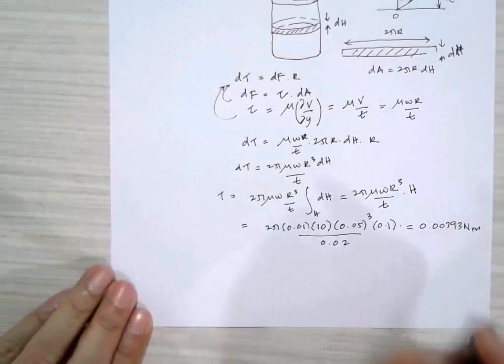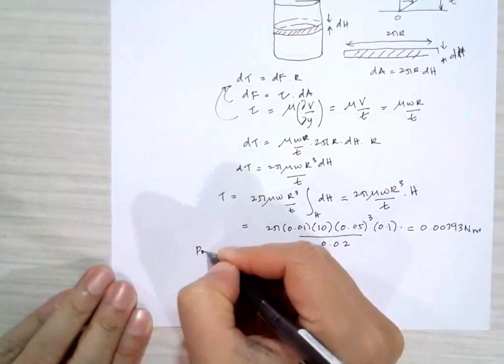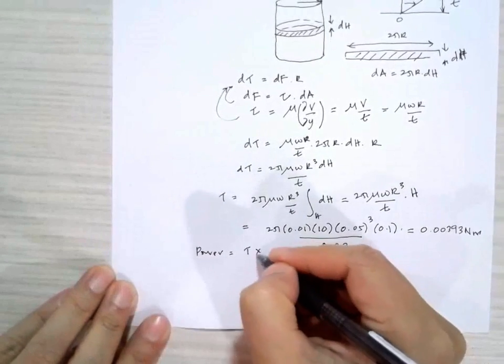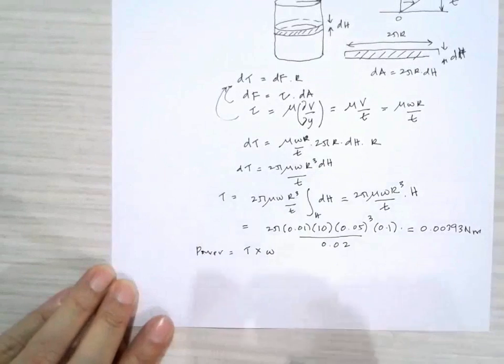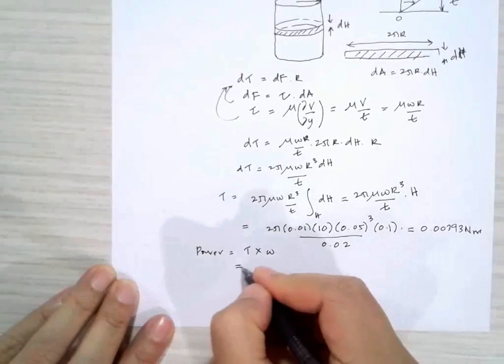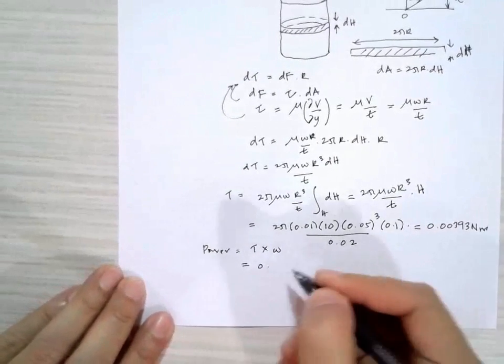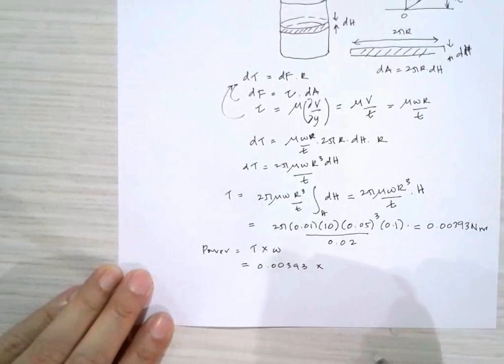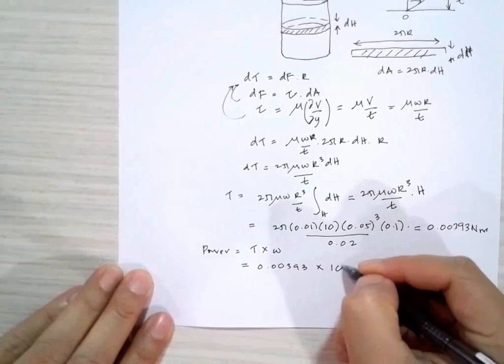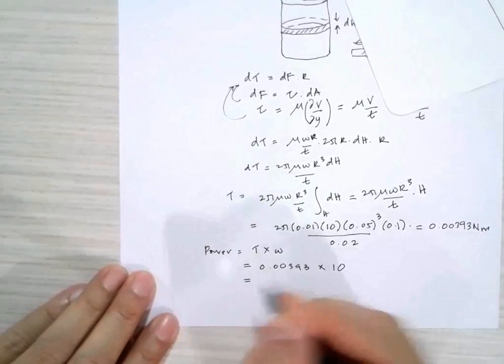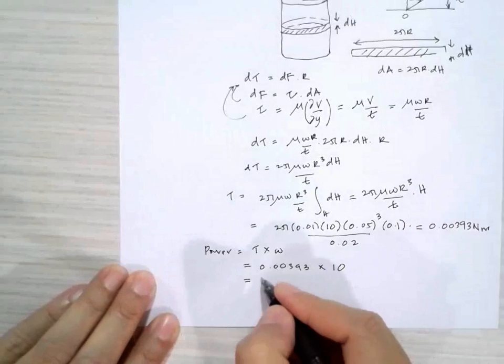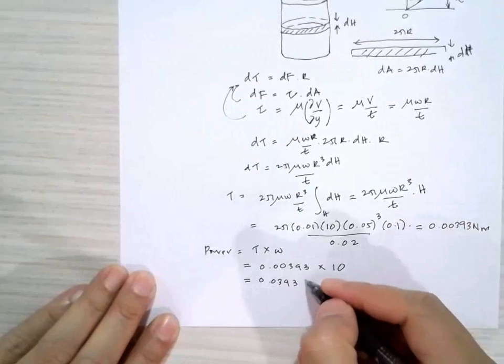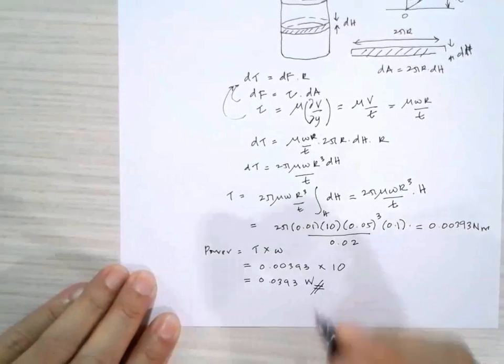To get the power, power equals torque multiplied by omega, which is 0.00393 times 10 radians per second, giving a value of 0.0393 watts.